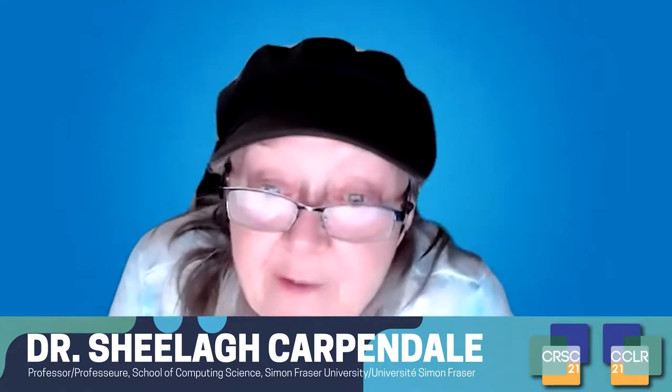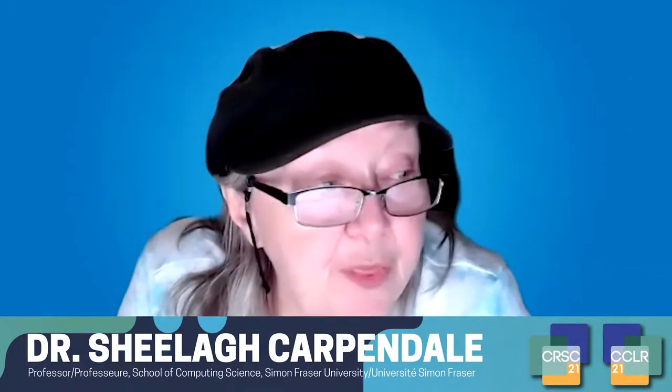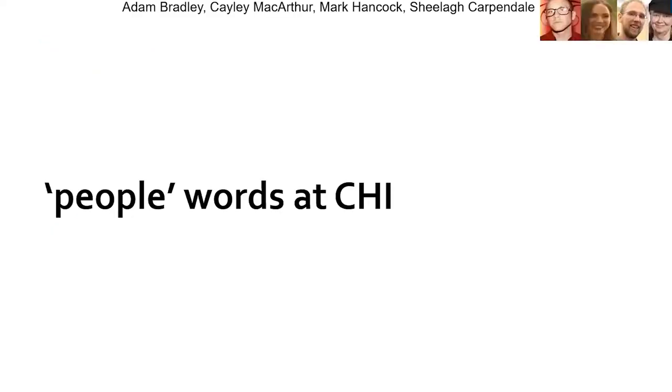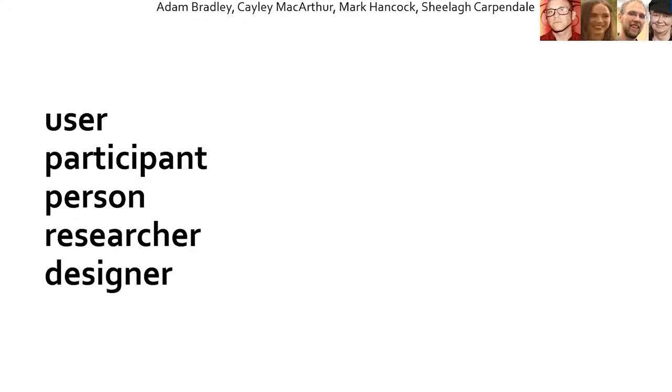All people in my lab will know that I've never actually liked the word 'user,' but we thought that maybe in trying to work towards mutual respect that we would actually study this word. So we started by looking at the words that are used to represent people at CHI, which is the big conference for human-computer interaction. These are the five people words that were most commonly used: user was by far the most common, then participant, person, researcher, and designer.